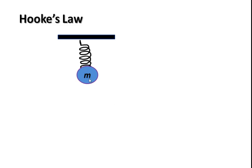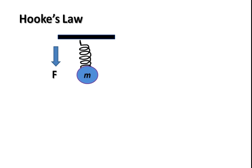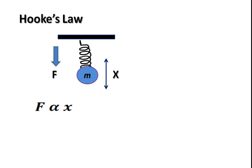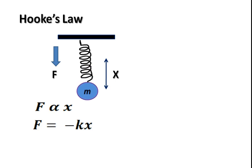Suppose we have a mass m that is hung on a spring. If we pull down the mass m by applying some force, it will oscillate and undergo simple harmonic oscillation. The displacement from the original position after applying force F will be x. So we can say that force is the restoring force which restores the body to its original position, and it is directly proportional to the displacement x. So force equals minus kx, where k is the force constant and x is the displacement.